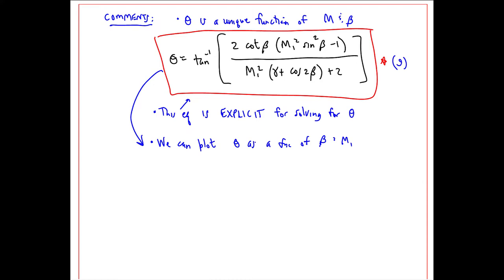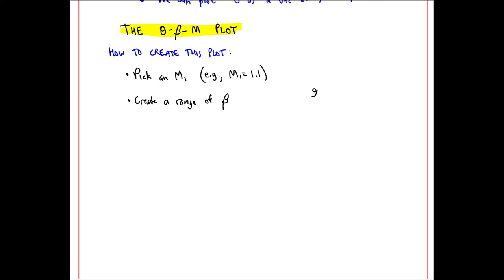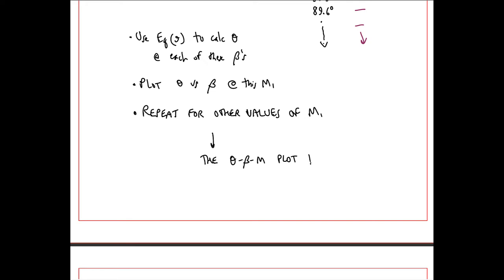So from this equation, we should be able to plot theta as a function of beta and M1. And that's what most people do, and they call it the theta beta M plot, which is another clever name. Here's a procedure for how to create this plot. You pick an M1. I'll pick 1.1 as an example. Then you create a range of beta. In Excel, I pick my range as 90 degrees and decreasing in rows. We start at 90 degrees, which is the special case of a normal shock. We use equation 9 to calculate theta at each of these betas and at this M1. Once I have these two columns, I plot theta versus beta at this M1. Then I repeat for other values of M1. This is how we generate the theta beta M plot.